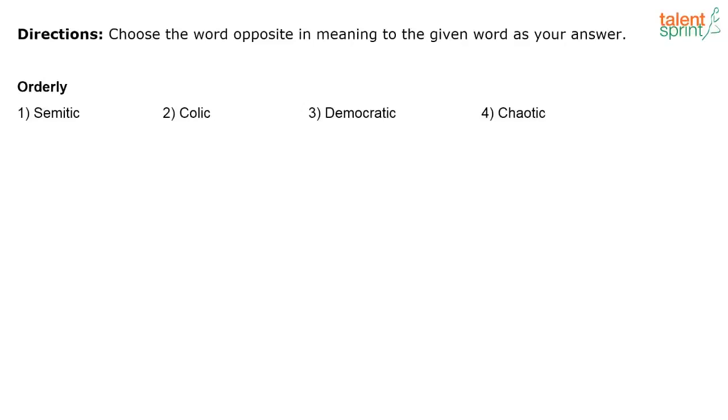Next: orderly. Options are semitic, colic, democratic, chaotic. I can easily pick the antonym of orderly — which is chaotic. Democratic is unrelated here. What is 'semitic'? Semitic is an adjective associated with Arabs and Jews — anything related to those people or their language. Most of these words originate from that region.